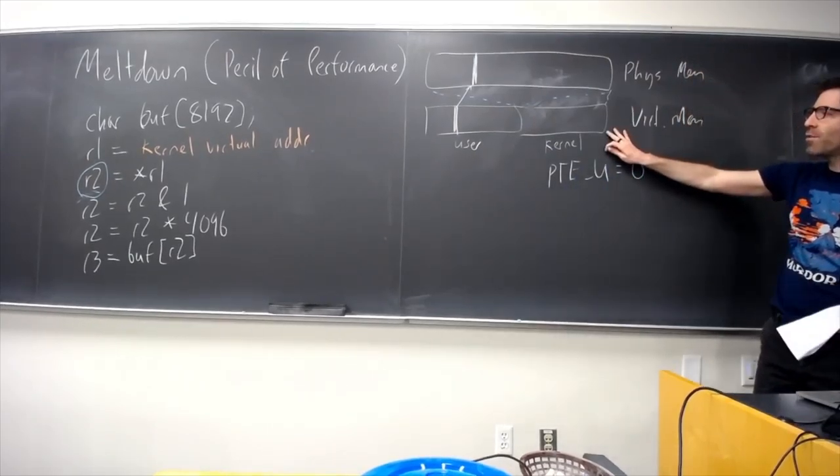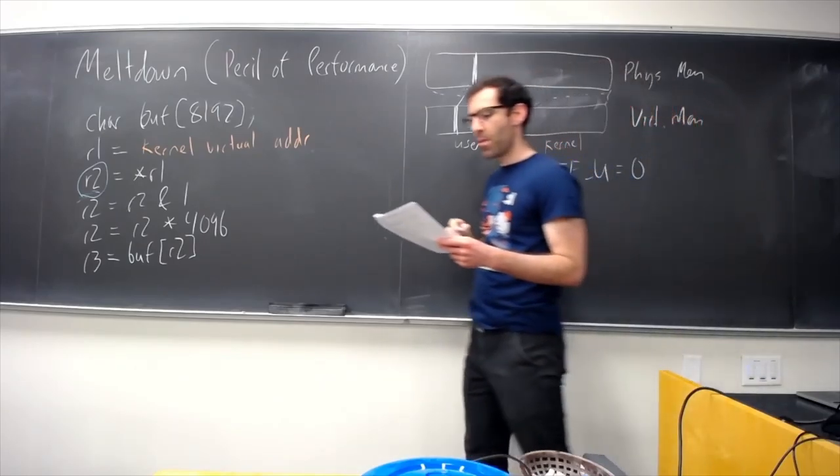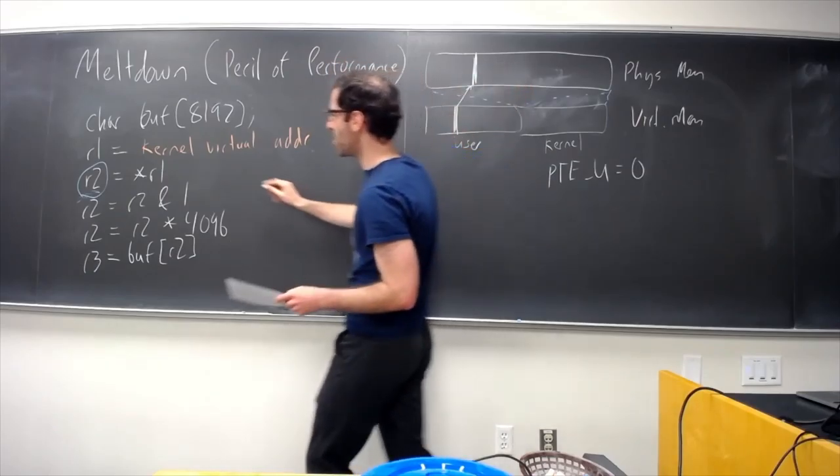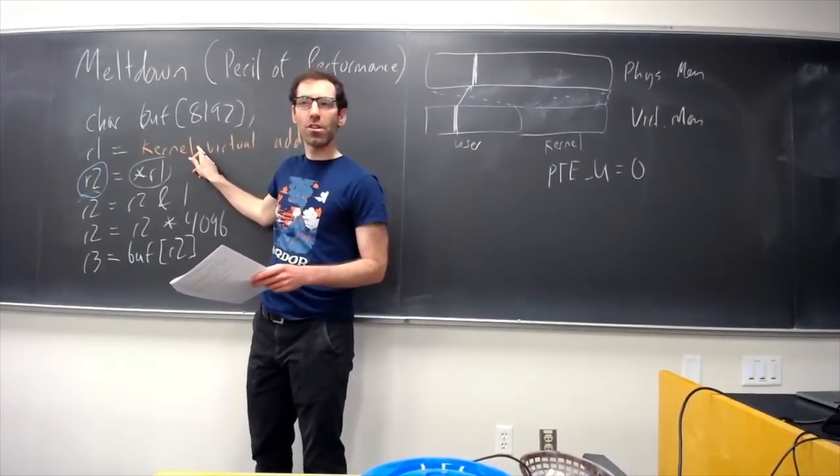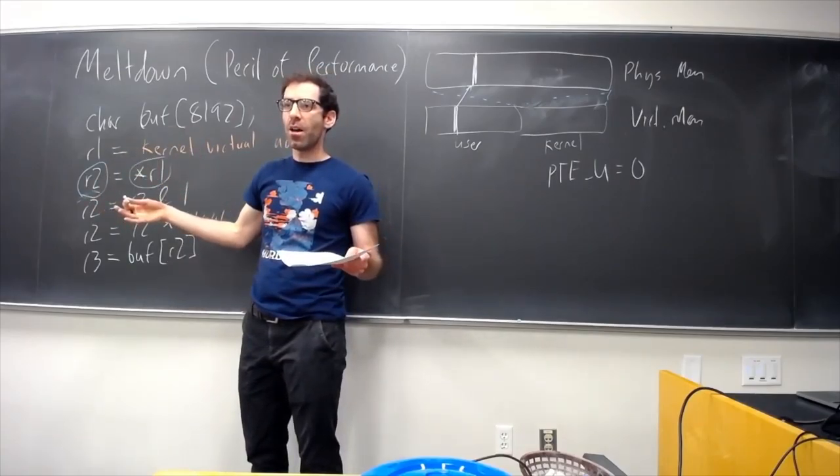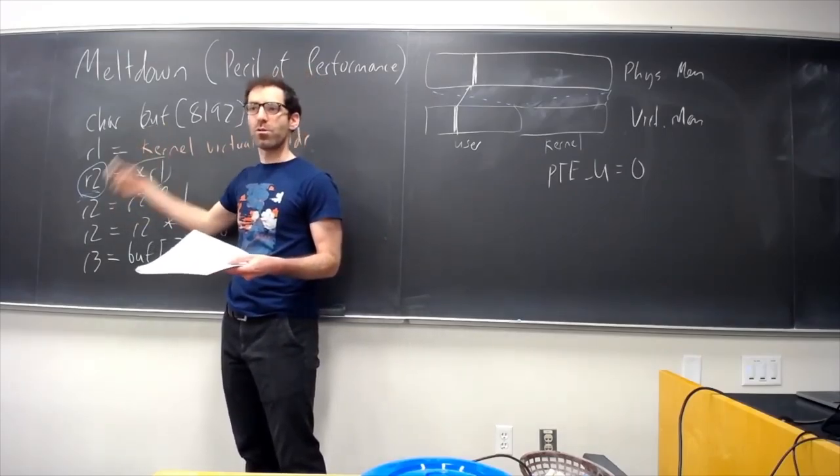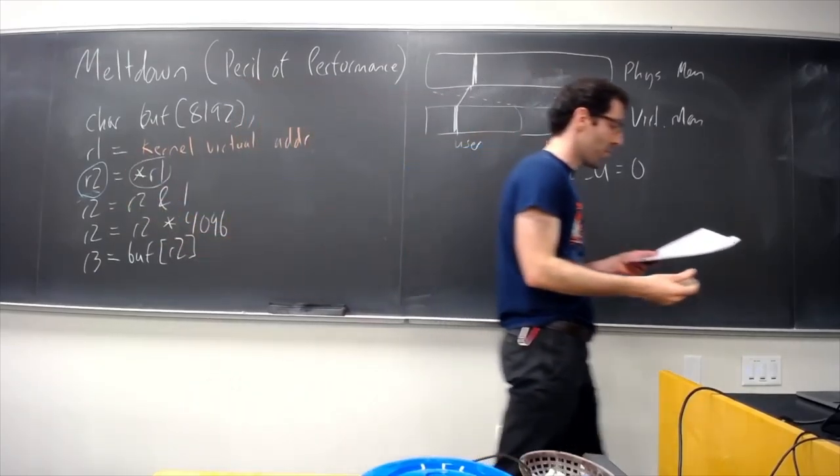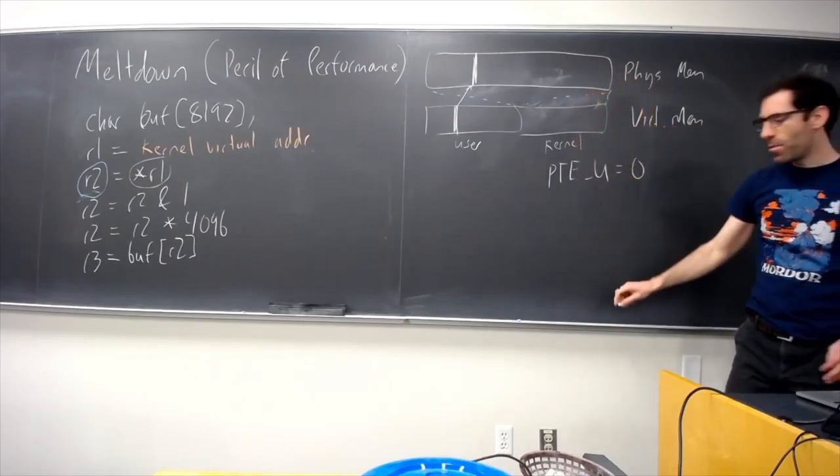All right. So, we have kernel and user here. And the point of this is that whether, like, this kernel virtual address that we're reading, it is a valid address. There is actually, like, meaningful data there. It's just forbidden. Like, the user process shouldn't be able to do it. But, there is actual stuff there. So, that's one part of the picture.